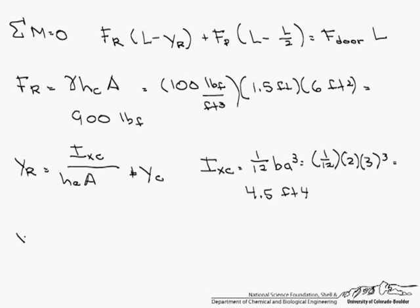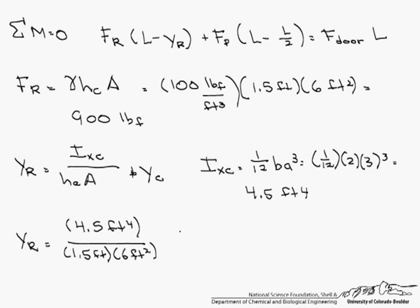Let's put that back in to figure out y sub r. That's 4.5 feet to the fourth, divided by 1.5 feet — again that's our h sub c — times our area of that door, which is 6 feet squared. And we add to that y sub c, which is the same as h sub c, which is 1.5 feet. So our y sub r is 2 feet.